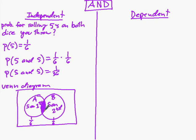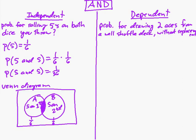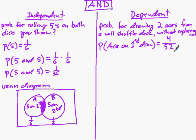Now let's move to the dependent example: what's the probability of drawing two aces from a well-shuffled deck without replacement? We need the probability of the first event — ace on first draw. There are four aces out of 52 cards in the deck, so it's four out of 52.